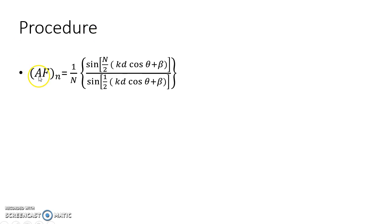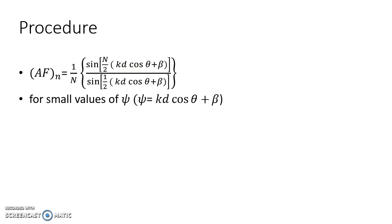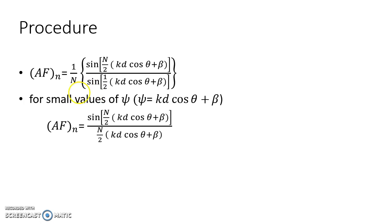To understand how these beta values are obtained, we consider the normalized array factor equation of an array, which is: (1/N) · sin(N/2 · (kd·cosθ + β)) / sin(½·(kd·cosθ + β)), where (kd·cosθ + β) is our phase term ψ. For small values of ψ, we can modify the array factor equation by removing the sin term in the denominator, giving the array factor a sinc function form.